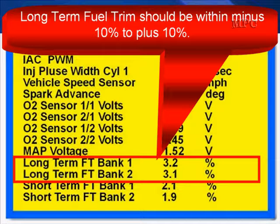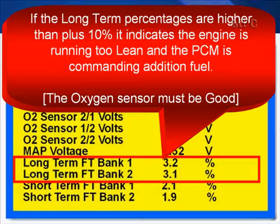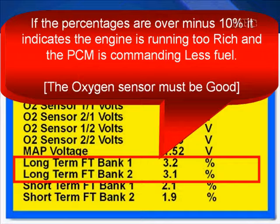Short-term fuel trim should be within minus 10% to plus 10%, and for perfect running engines, plus or minus 5%. If the long-term percentages are higher than plus 10%, the engine is running too lean and the PCM is commanding additional fuel to compensate. If the percentages are over minus 10%, the engine is running too rich and the PCM is making a correction by commanding less fuel.